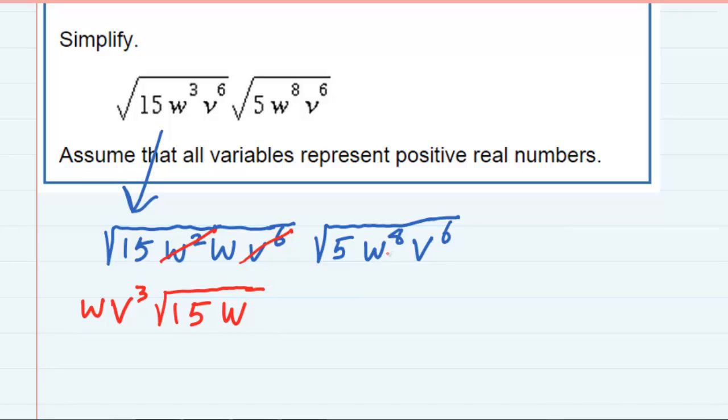In the next expression, I can bring out the w to the 8 as a w to the fourth, and I can bring out the v to the 6 as a v cubed, again by dividing their powers by 2, and the 5 has to stay underneath the radical.